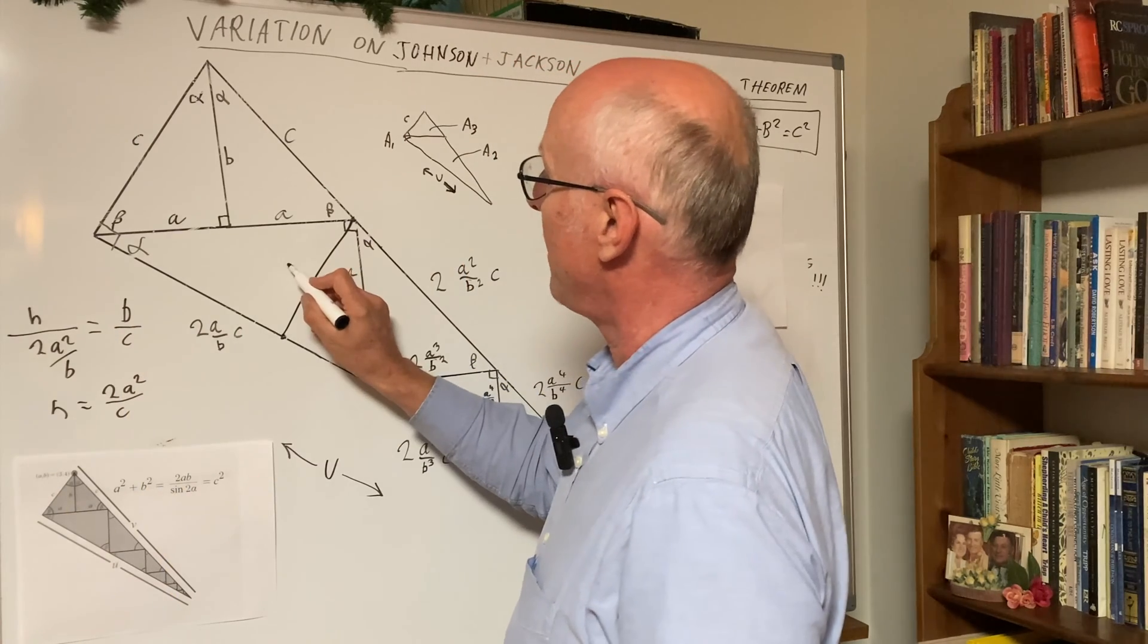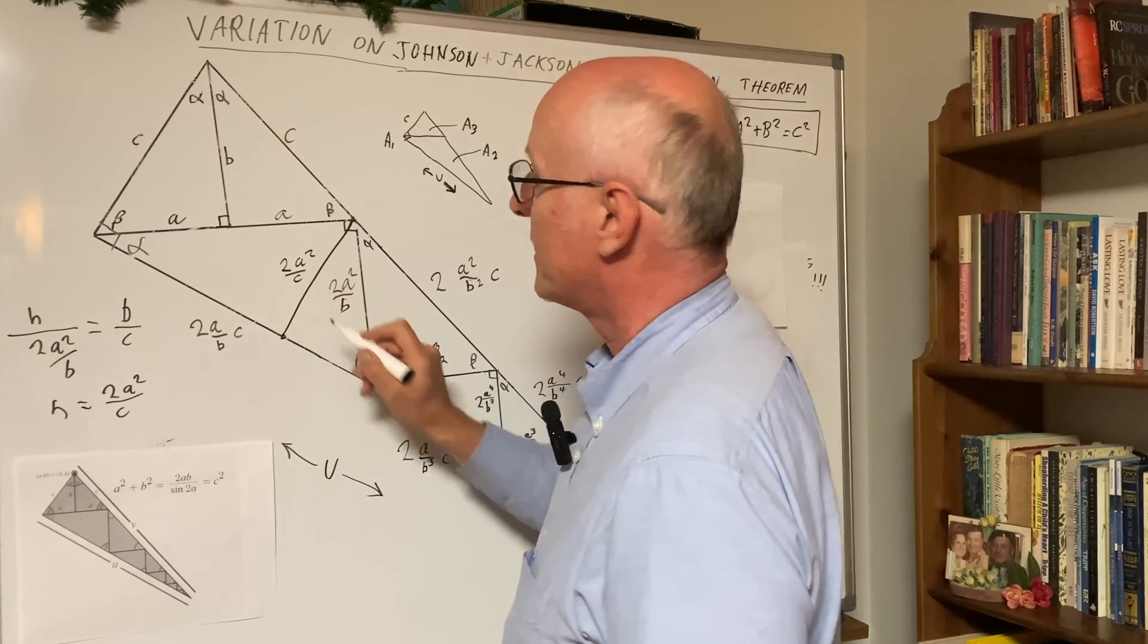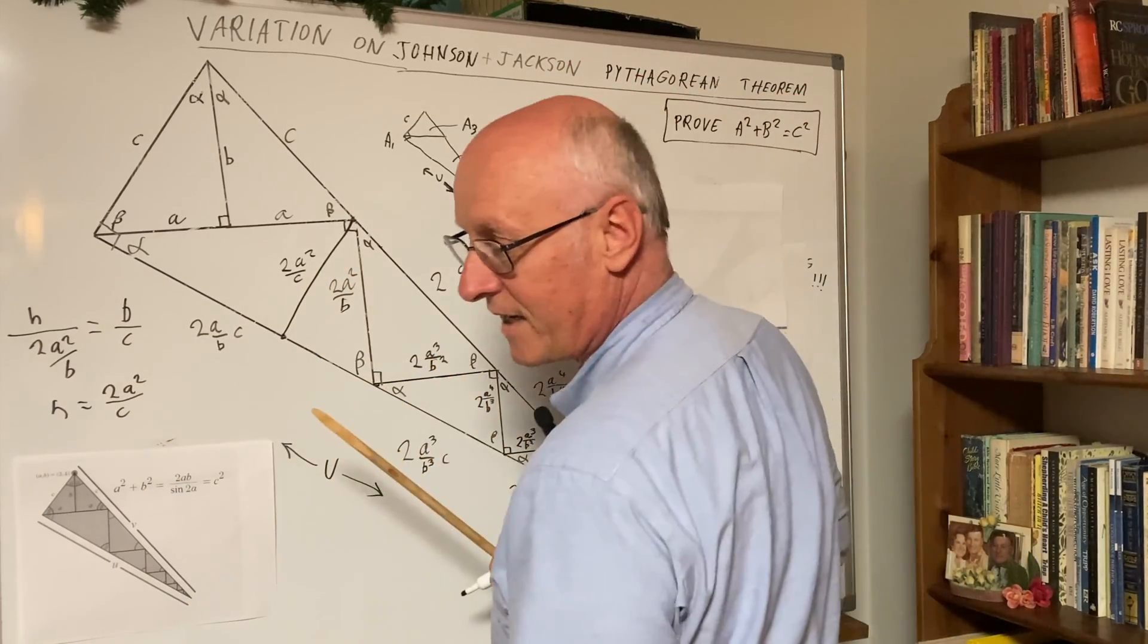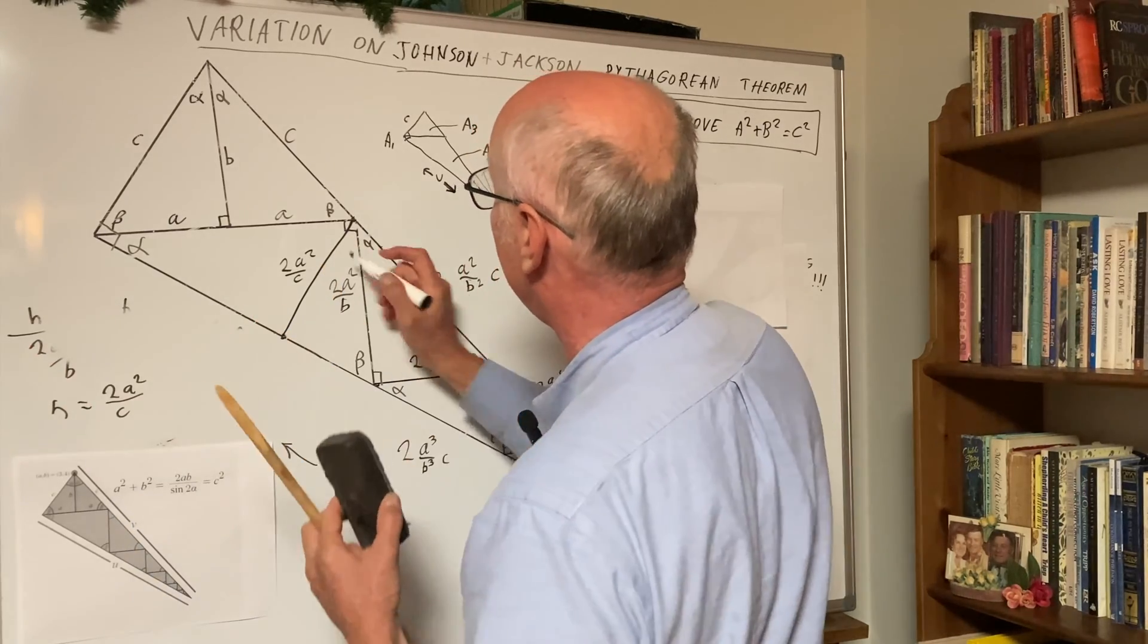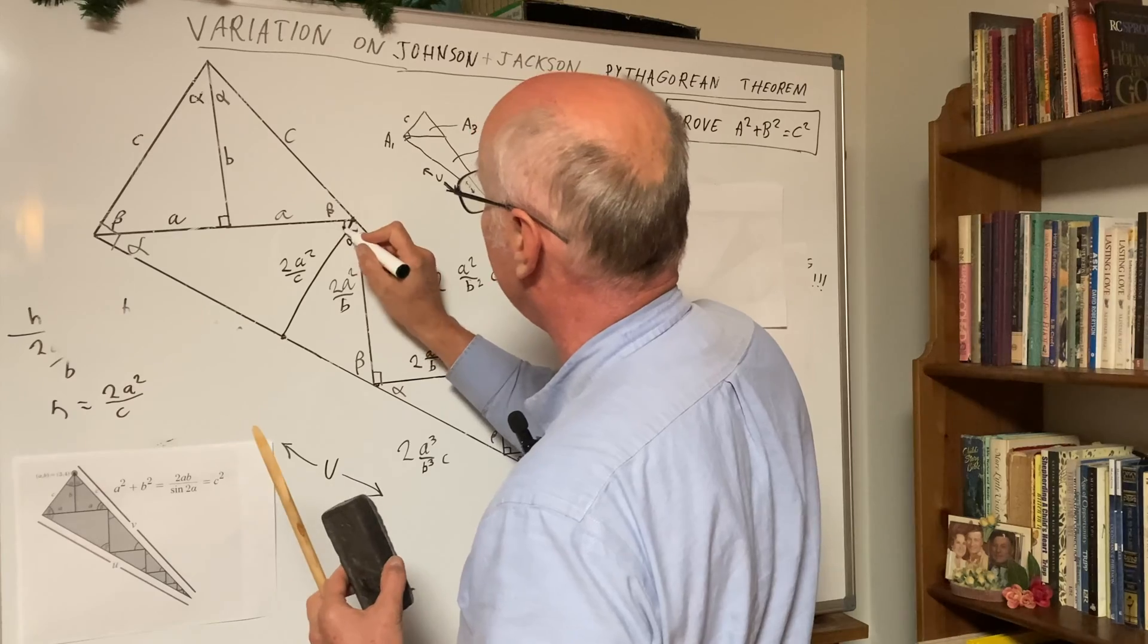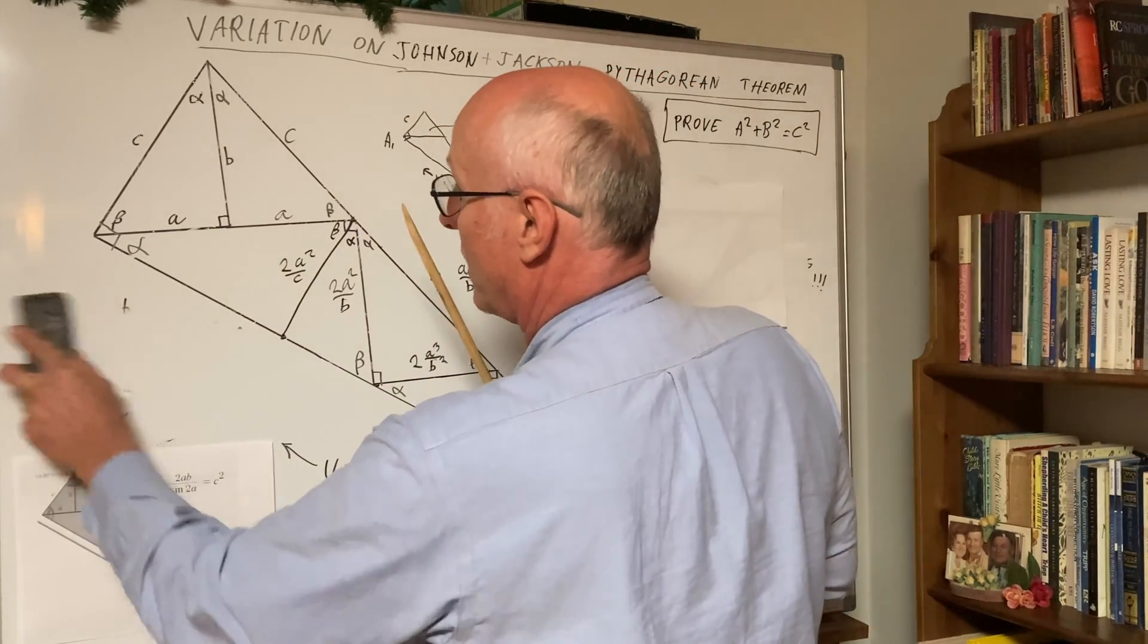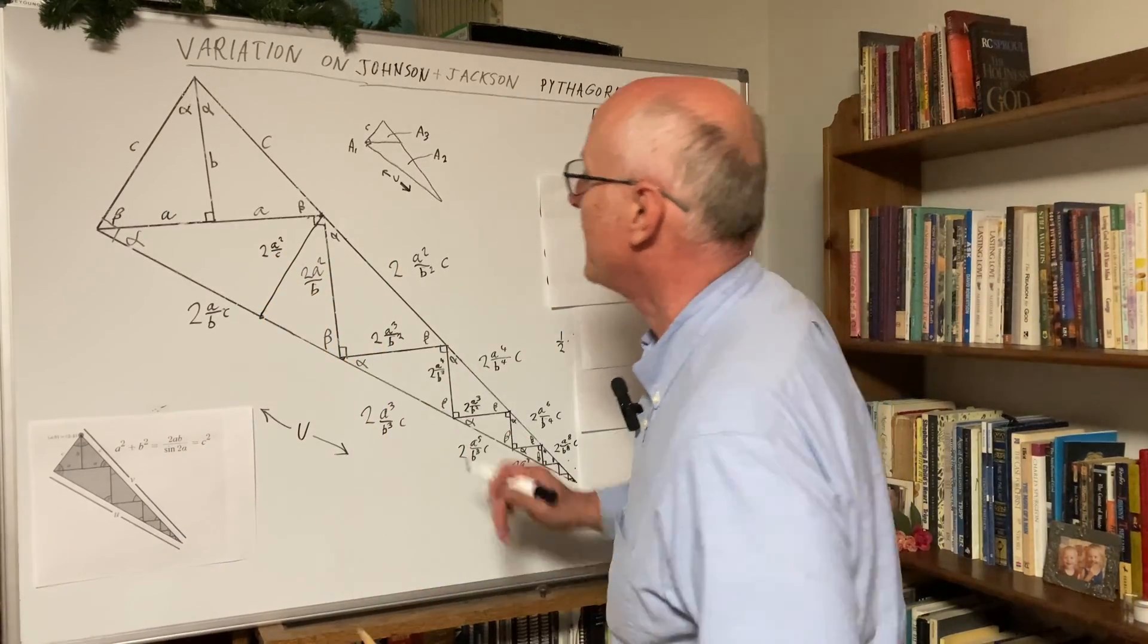So now we have the length 2a squared over c. All right, love it. That's how you get it. That's basically how you do it. That's the cosine of alpha, here's beta, and so on.